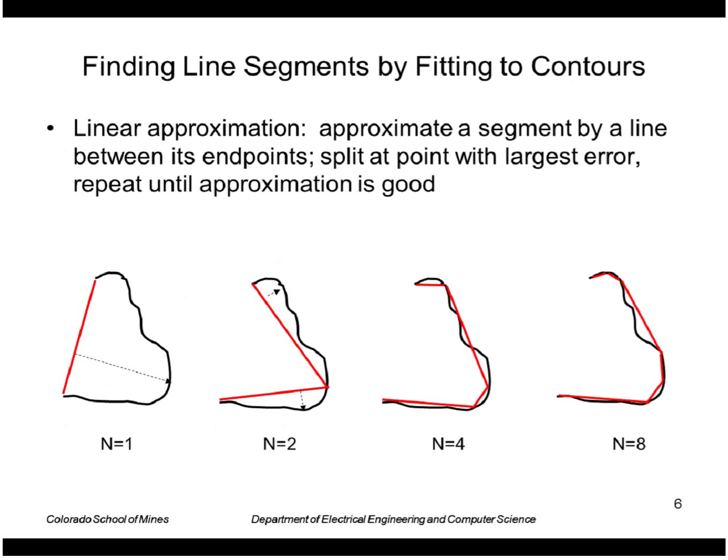Let's say we're trying to fit line segments to edge points and we found a connected chain. One way we can do that is by this iterative method of recursively connecting the endpoints of the chain, finding the point along the chain that has the largest error to the line segment, and then splitting the chain at that point and refitting the line segments there.